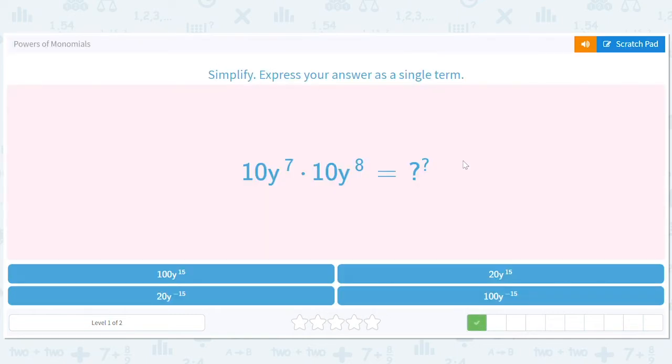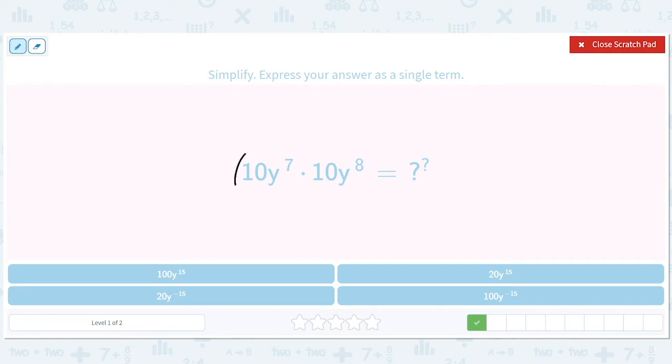Okay, same idea. We have the 10 and the 10. We combine those. We get 100. And then we have y to the seven plus eight. And that's going to give us 100y to the 15th.